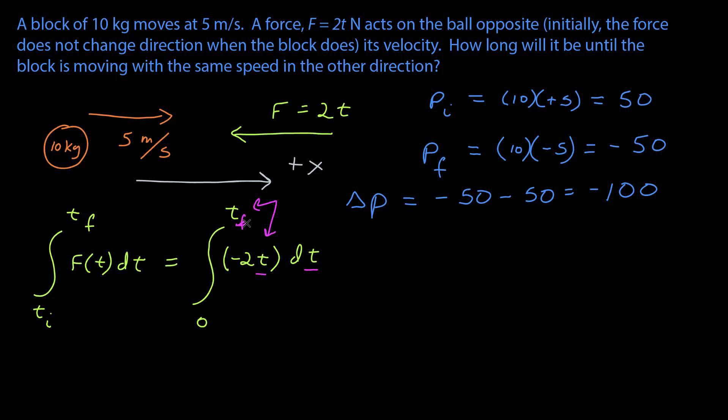If that's confusing, you can just keep the final time on the limit of integration. This is a simple integral. The indefinite integral would be minus 2t squared over 2, evaluated between t and 0, or t final and 0, if you like. And I get negative t squared is equal to negative 100, the change in momentum from before. If I cancel out the minus signs, I have t squared equals 100, square root of both sides, and the time is equal to 10 seconds. So it takes 10 seconds to turn the block all the way around to go 5 meters per second in the other direction.